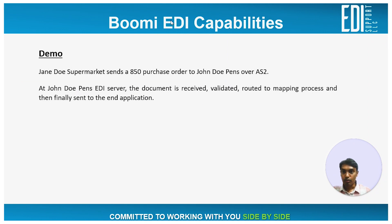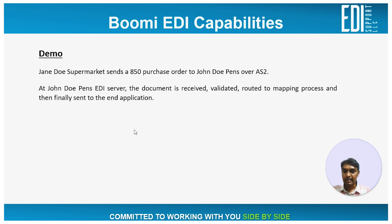Now I would like to show our demo on the Boomi EDI capabilities. I'll show an end-to-end flow of an EDI document being received, translated into an XML, and sent to an HTTP endpoint. Here is the situation: Jane Doe Supermarket sends an 850 purchase order to John Doe Pens over AS2. The John Doe Pens EDI server receives the document, validates it, routes it to a mapping process where it gets translated from EDI to XML, and then finally sent to the ERP application. The host trading partner is John Doe Pens EDI server, whereas the remote trading partner is Jane Doe Supermarket.